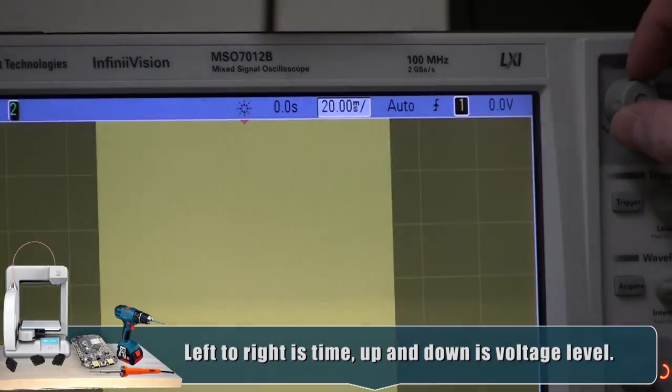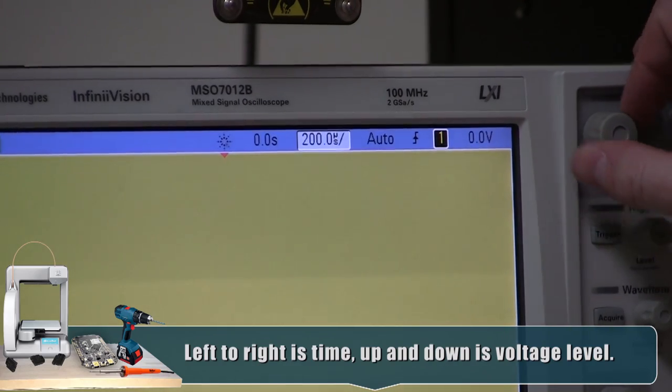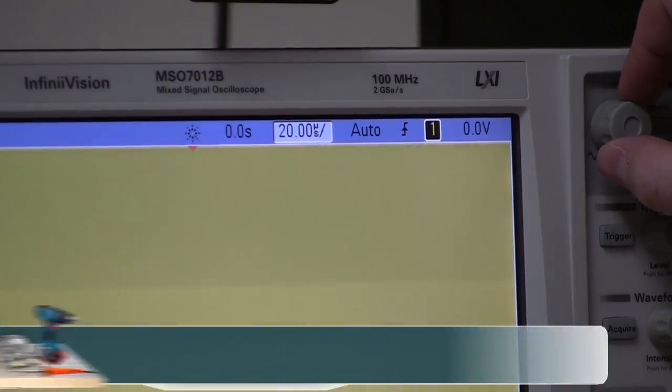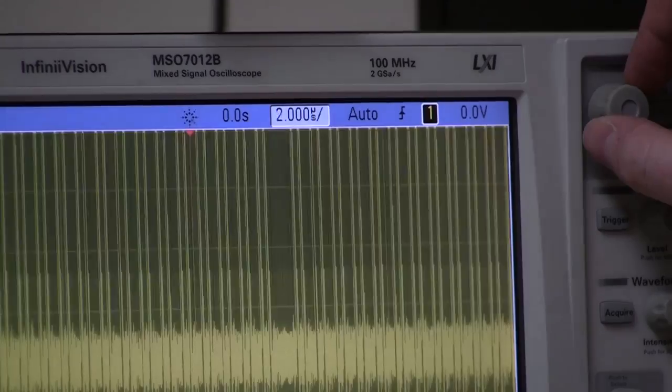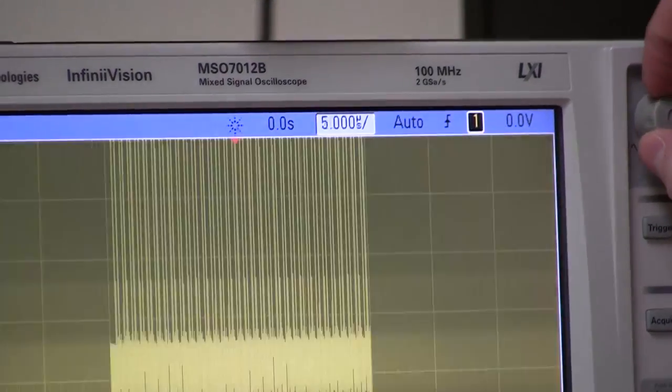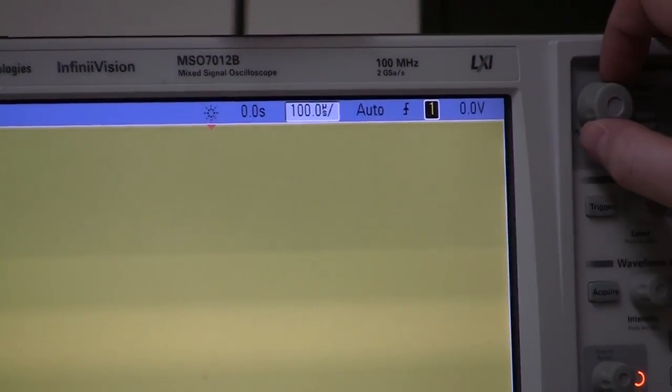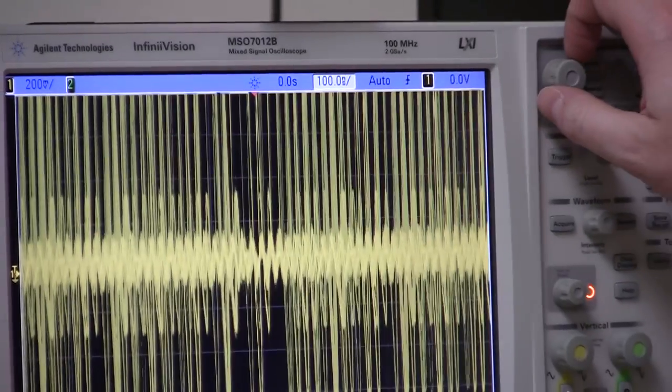So here we are in milliseconds, microseconds, what looks like a US, and nanoseconds. So thousandths, millionths, billionths of a second.